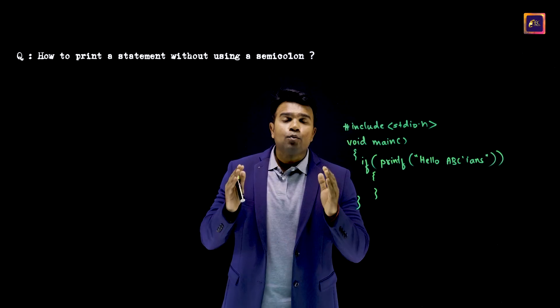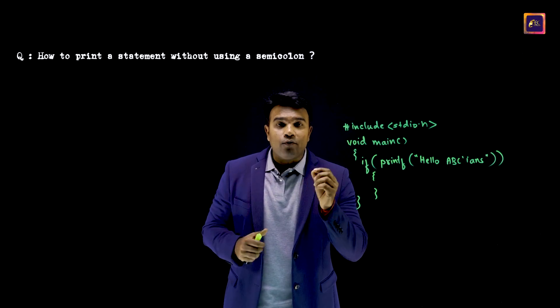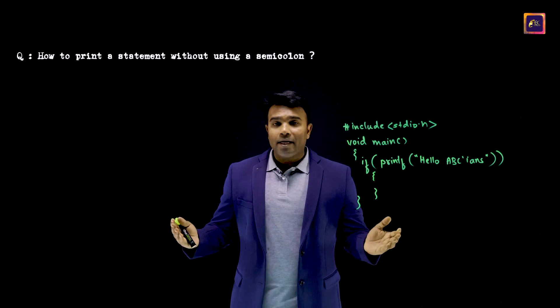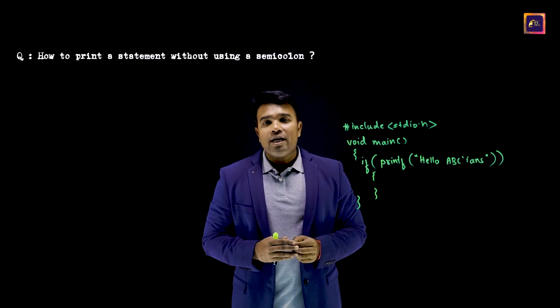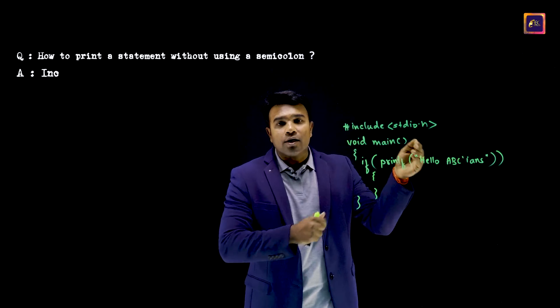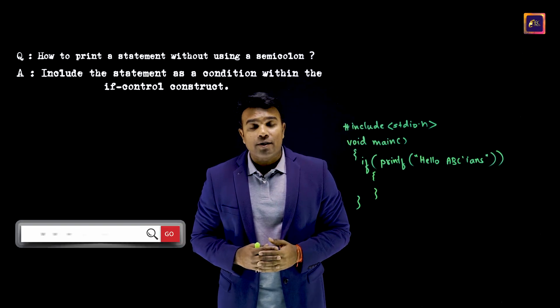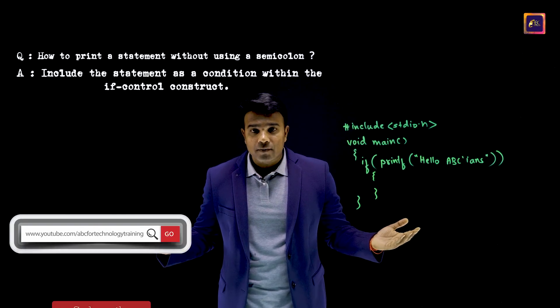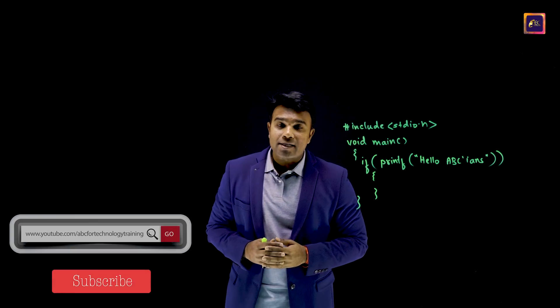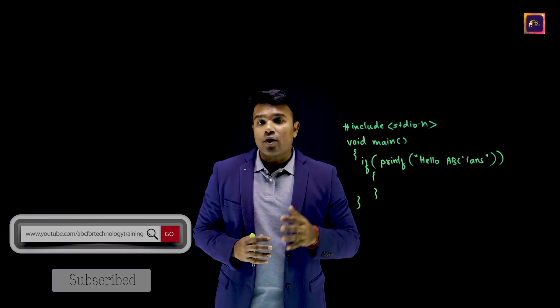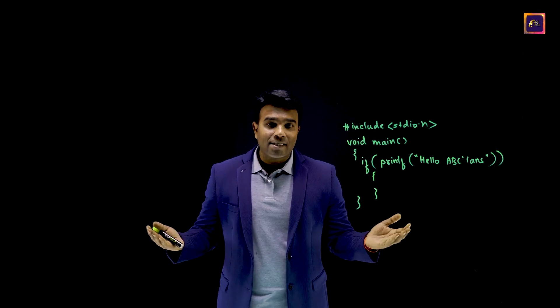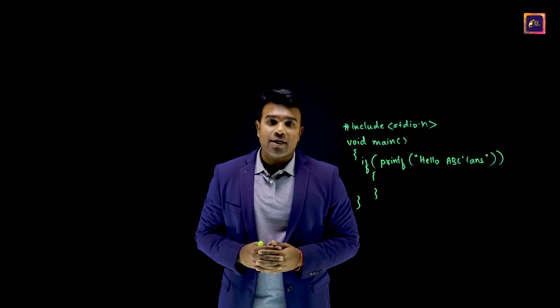So, if there is an interview question asking you how do you print something on the screen without using a semicolon, then your answer has to be that such a statement has to be included as a condition of the if-control construct. A simple solution. Hope you've been able to understand it, and many such new things is what you will be learning through this series of videos. Thank you for watching.